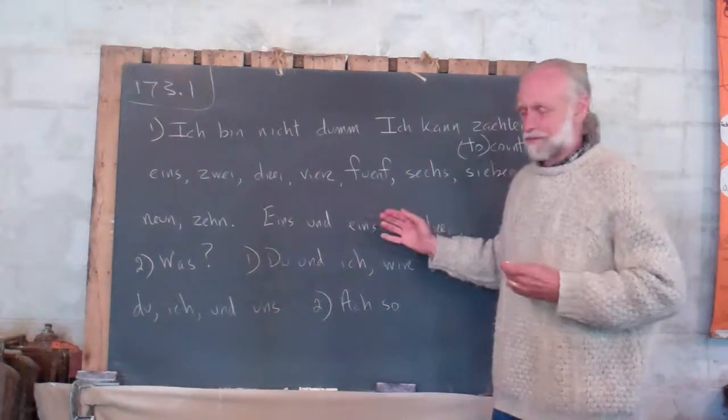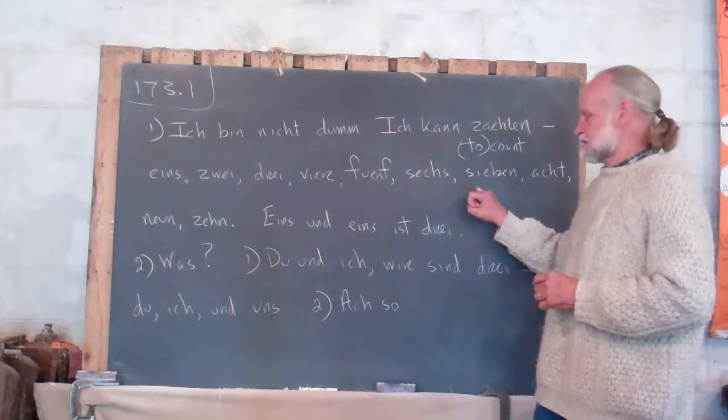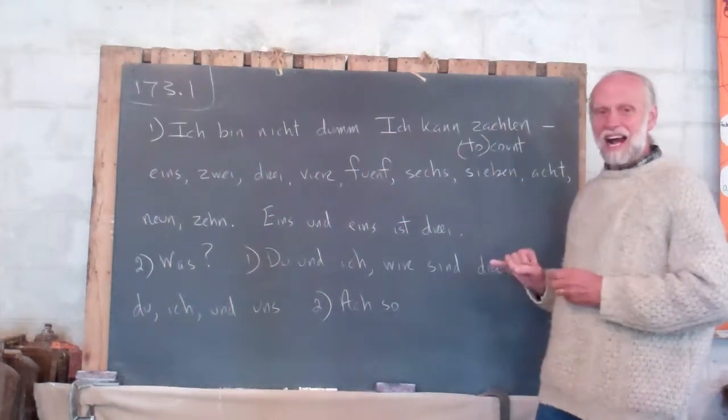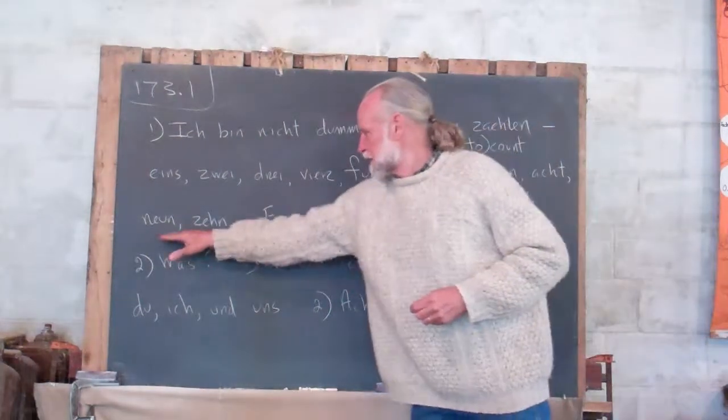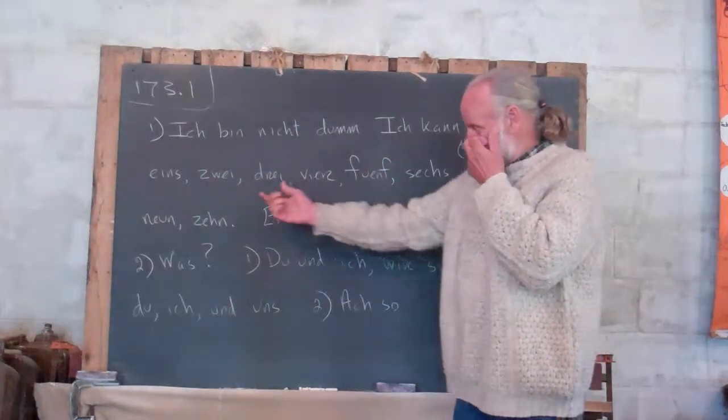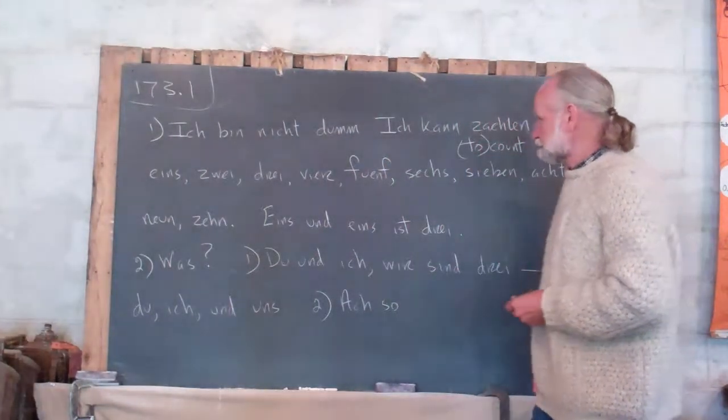Fünf, sechs, sieben, acht, neun, zehn. So there's one to ten in German.